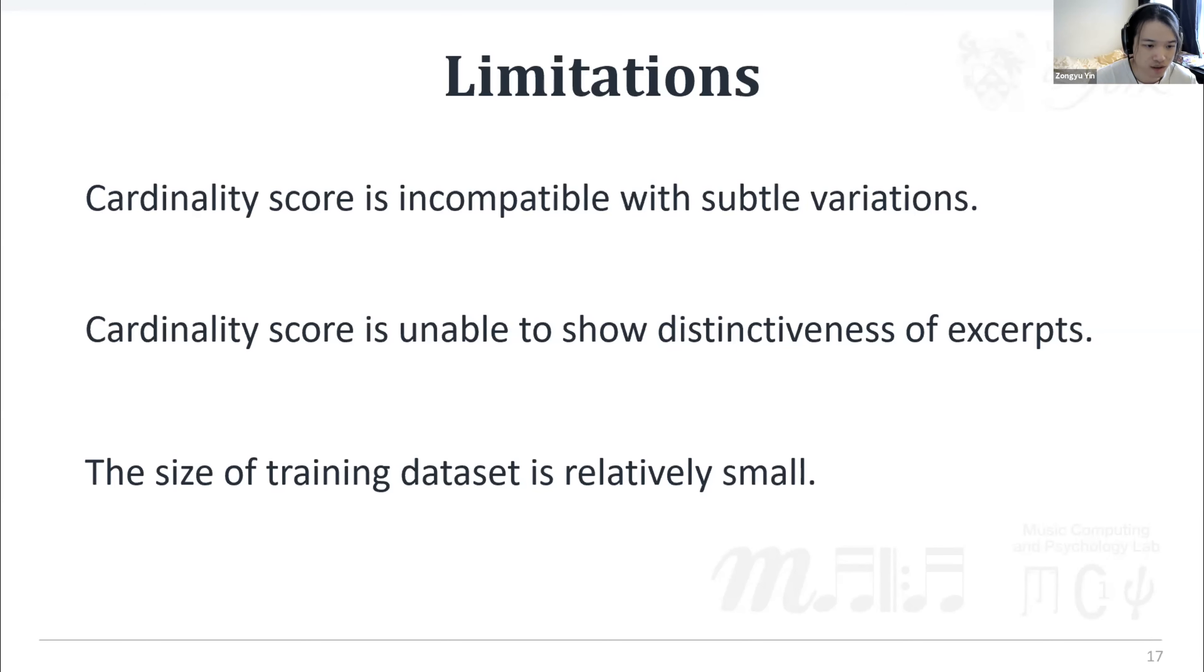For instance, the first two excerpts used to demonstrate the calculation of cardinality score indicated an instance of similarity between Mozart and Haydn. But when we take into account how many classical pieces end in this way, it is not particularly distinctive or interesting example.